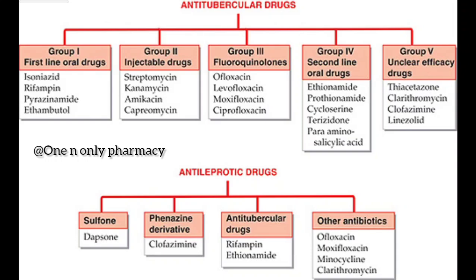Fluoroquinolones end with '-floxacin': Ofloxacin, Levofloxacin, Moxifloxacin, Ciprofloxacin. Second-line oral drugs: Ethionamide, Prothionamide, Cycloserine, Terizidone, Para-aminosalicylic acid. And the unclear efficacy drugs: Thiacetazone, Clarithromycin, Clofazimine, and Linezolid. These are the classifications of anti-tubercular drugs.